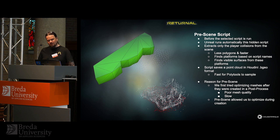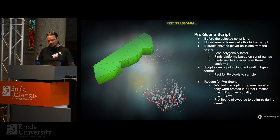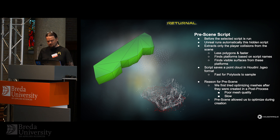Before any actual script runs, Unreal automatically runs a hidden script that extracts all the player collisions in the scene. The purpose is to store platform locations for later polytool usage. Platforms are recognized based on the script used on the collisions — that script information is one of the custom data fields our JSON format provides. Results are saved in Houdini's own BGEO file format as a point cloud. At the beginning of Returnal, we didn't have this, and users had to manually select scripts based on their location.